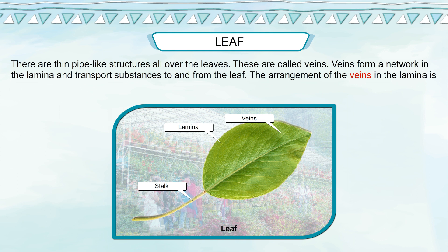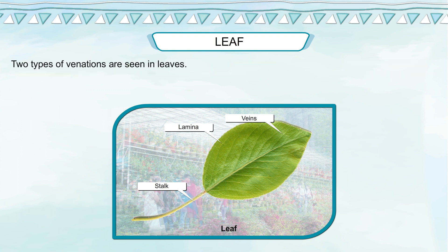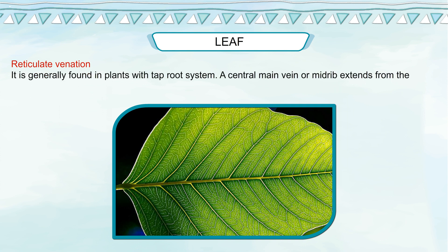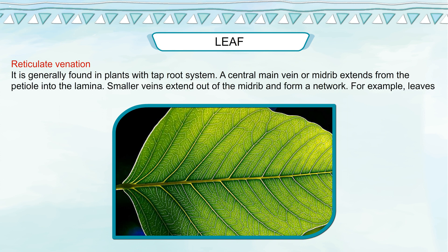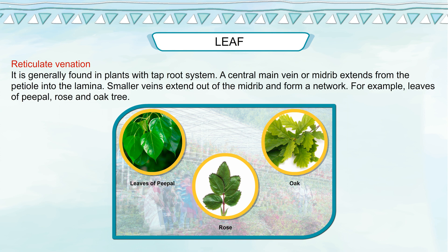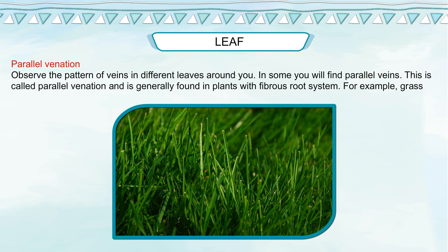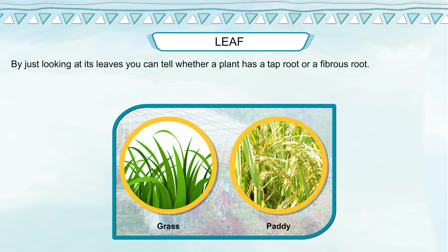The arrangement of veins in the lamina is called venation. Two types of venation are seen in leaves. Reticulate venation is generally found in plants with a taproot system. A central main vein or midrib extends from the petiole into the lamina, and smaller veins extend out of the midrib to form a network. Examples: peepal, rose and oak tree. Parallel venation, where veins run parallel to each other, is generally found in plants with fibrous root system. Examples: grass and paddy. By just looking at its leaves, you can tell whether a plant has a taproot or a fibrous root.